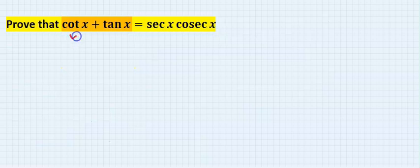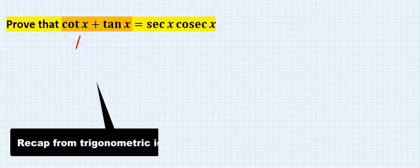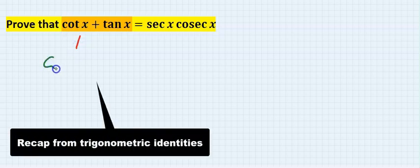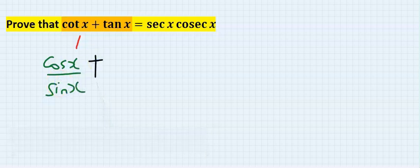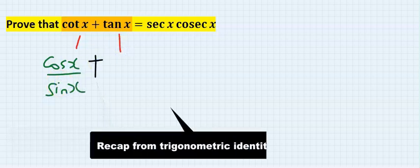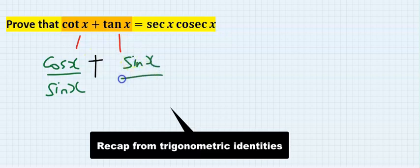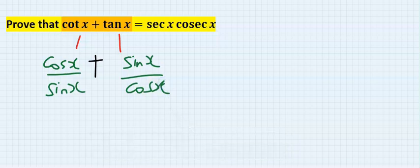We want to prove that cot x plus tan x will give you sec x cosec x. The value of cot x is cos x over sin x, plus the value of tan x is sin x over cos x. We can now solve.